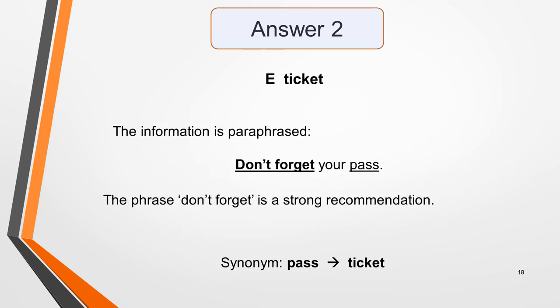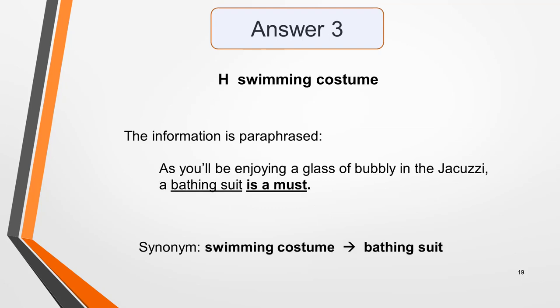Answer 2 is E — Ticket. This answer is a little more tricky to identify as the information is paraphrased. The sentence is: 'Don't forget your pass.' The phrase 'don't forget' is a strong recommendation. In fact, taking your pass — a synonym of ticket — is something you must do in order to gain entry to the spa. Finally, answer 3 is H — Swimming costume. The sentence is: 'As you'll be enjoying a glass of bubbly in the jacuzzi, a bathing suit is a must.' Again, a synonym has been used: swimming costume for bathing suit. Saying that you must take one is another strong recommendation.